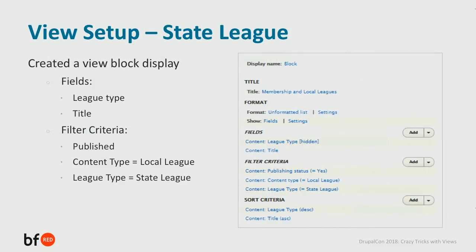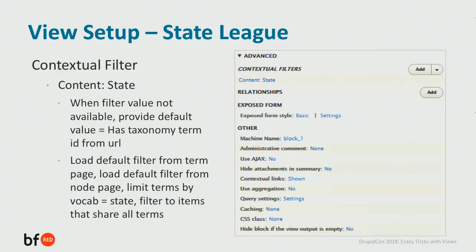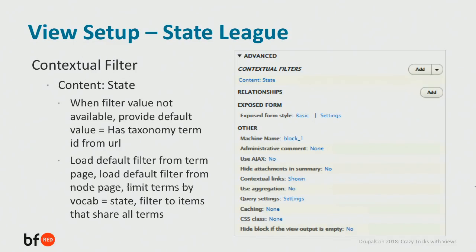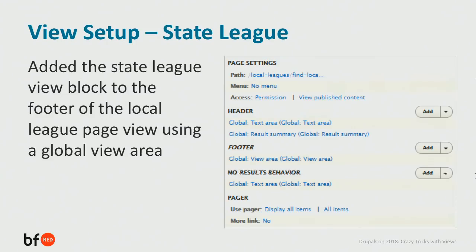We also created a view block display, very similar to the page display. The filter value it accepts is the state field, and we have the default value set to 'has taxonomy term ID from URL' — an entity reference field to the state taxonomy vocabulary. Once that filter value is in the URL, it will know which state league to display. We added that state league view block to the footer region of the local league page view using a global view area.